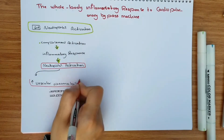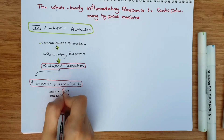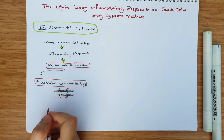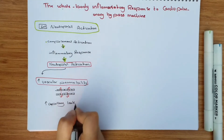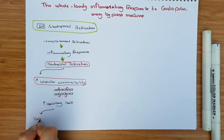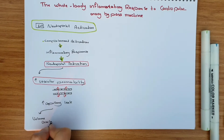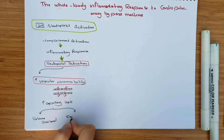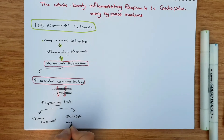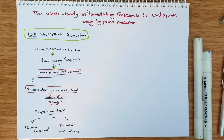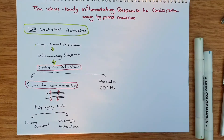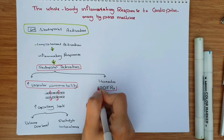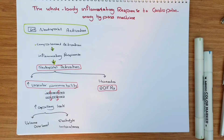The activation of neutrophils has a few effects on the human body. The first is that it increases vascular permeability, and this increase in vascular permeability leads to increased capillary leak, which leads to volume overload and electrolyte imbalance. So specifically during the cardiopulmonary bypass machine, neutrophils increase vascular permeability, increase capillary leak, causing volume overload and electrolyte imbalance.